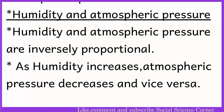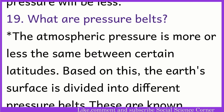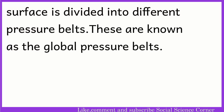Humidity and atmospheric pressure are inversely proportional. As humidity increases, atmospheric pressure decreases and vice versa. Water vapor is lighter than air and hence it ascends. If the quantity of water vapor is more in a unit volume of air, then naturally the atmospheric pressure will be less. The atmospheric pressure is more or less the same between certain latitudes. Based on this, the earth's surface is divided into different pressure belts, known as the global pressure belts.